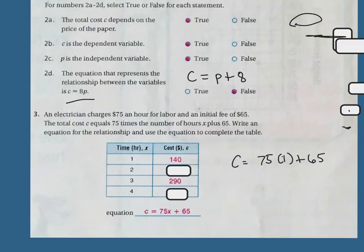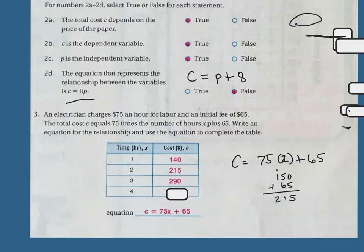Now instead of 1, I'm going to plug in a 2. So 2 times 75 is 150, plus 65 — 5 plus 0 is 5, 5 and 6 is 11, 1 and 1 is 2 — so I get 215. And then if I plug in a 3, I do 3 times 75 plus 65 and it's 290.